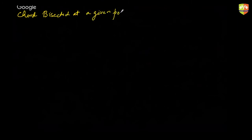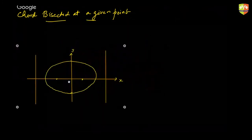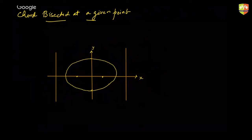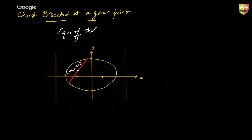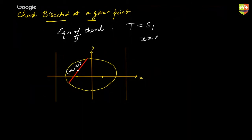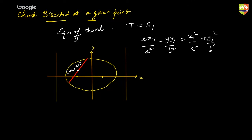We'll now move on to the next concept: chord bisected at a given point. The concepts are quite repetitive — whatever you learned in circles is repeating here with minor changes in representation. If you have a chord whose midpoint is (x₁, y₁), then the equation of that chord is T = S₁, that is xx₁/a² + yy₁/b² = x₁²/a² + y₁²/b².